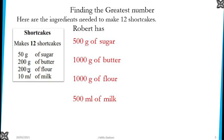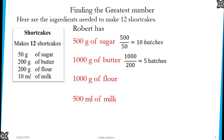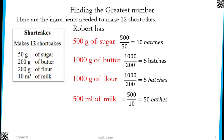Let's divide and see what happens. For sugar, you can go for 10 batches before it runs out. For butter, 5 batches before it runs out. For flour, 5 batches before it runs out. Like we said, you can go for as many batches as you want, but the fact is they will be limited by some of the ingredients. Sugar allows 10 batches, but butter and flour only 5 batches.